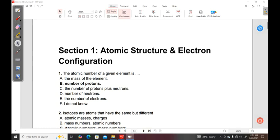The atomic number of a given element is: A, the mass of the element; B, number of protons; C, the number of protons plus neutrons; D, the number of neutrons; E, the number of electrons; F, I do not know.